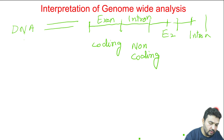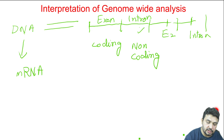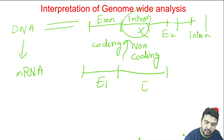When messenger RNA is formed, we know that introns are spliced out. So exon 1 is connected with exon 2 — the intron is spliced out — and finally messenger RNA is formed. When the messenger RNA is formed, it is translated into a protein.